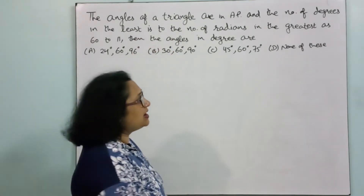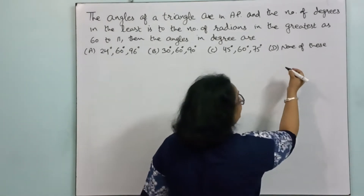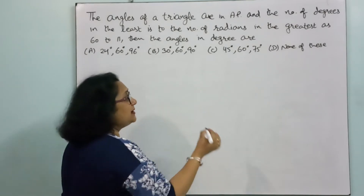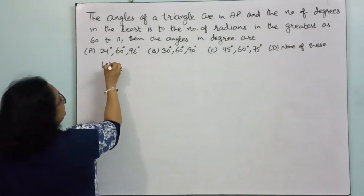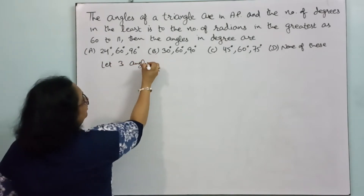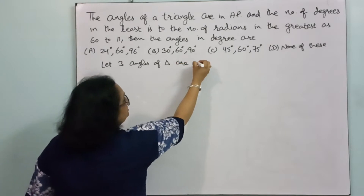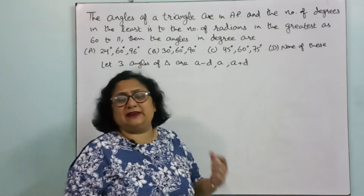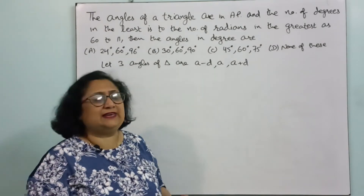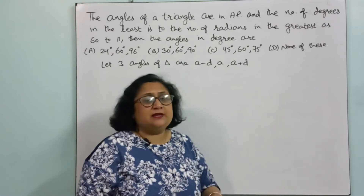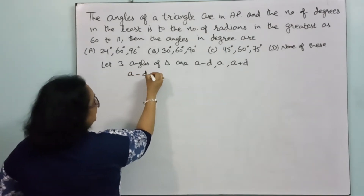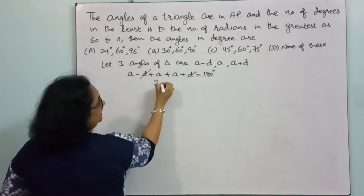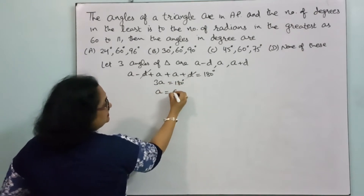There are three angles in the triangle. In any kind of triangle, if you have three angles, the sum is 180 degrees. So we will do the same here — let three angles of the triangle be a minus d, a, and a plus d. Since the sum of angles in a triangle is 180 degrees, d cancels and 3a = 180°, so a = 60 degrees.